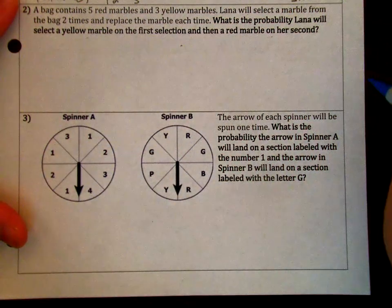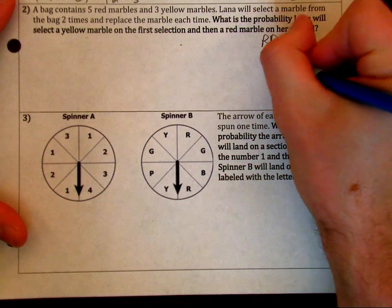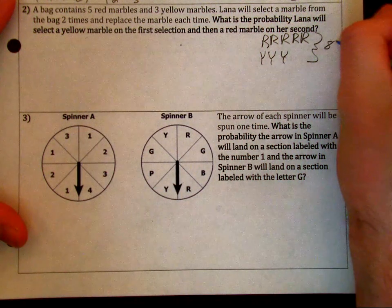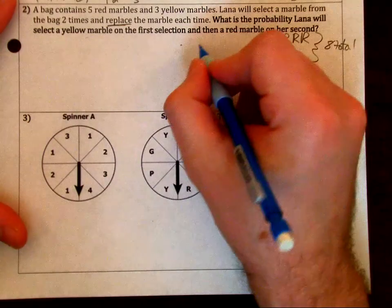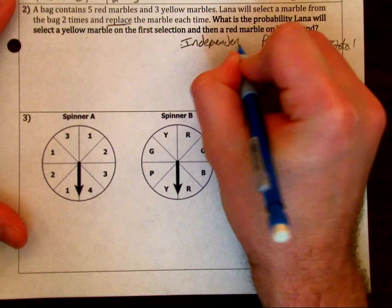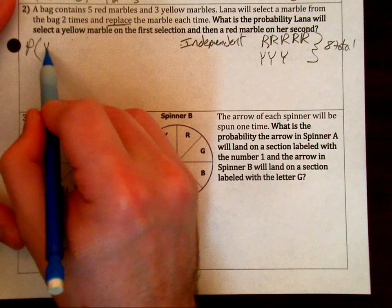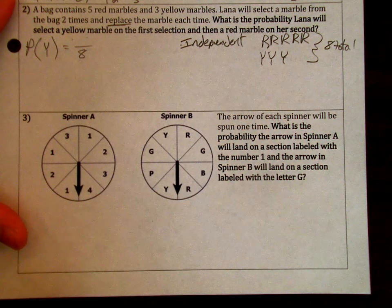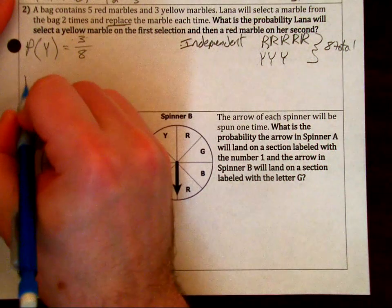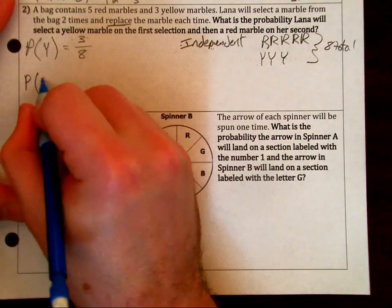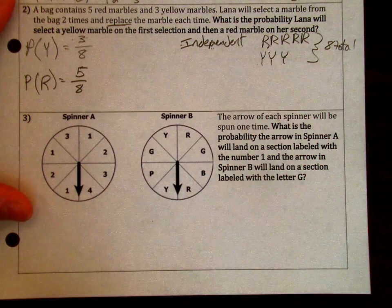What is the possibility that Lana will select a yellow on the first and a red on the second. So we can draw out our sample space. We have five red, three yellow, all together gives us eight total. That's going to be our denominator. Since it says replace, we know this is going to be independent. The probability of picking a yellow first, there's eight total, so that's in our denominator. Of those eight, how many are yellow? There are three yellow. Very similarly, since it's independent, we place it back. We have still eight total, five of which are red.